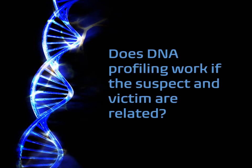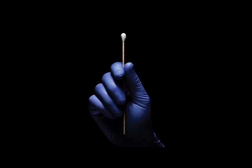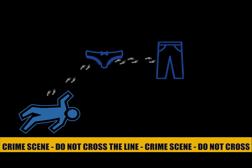Does DNA profiling work if the suspect and victim are related? Well, the short answer is yes, but how does it work? Let's have a look at this hypothetical crime scene. At the scene, the body of a young female is found along with stained underwear and a pair of pants. The case was described as an alleged sexual assault case. What DNA evidence can you find?